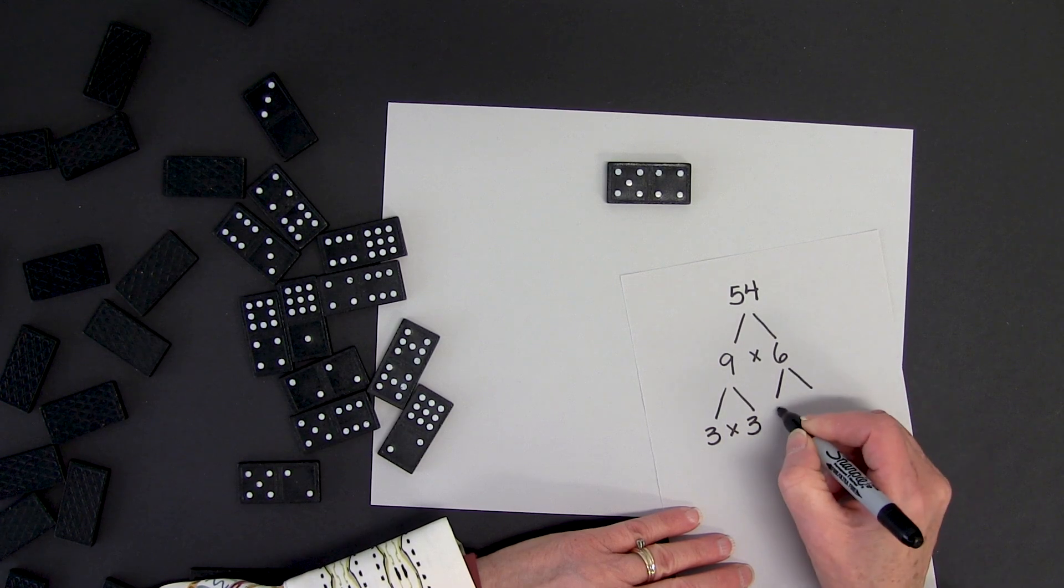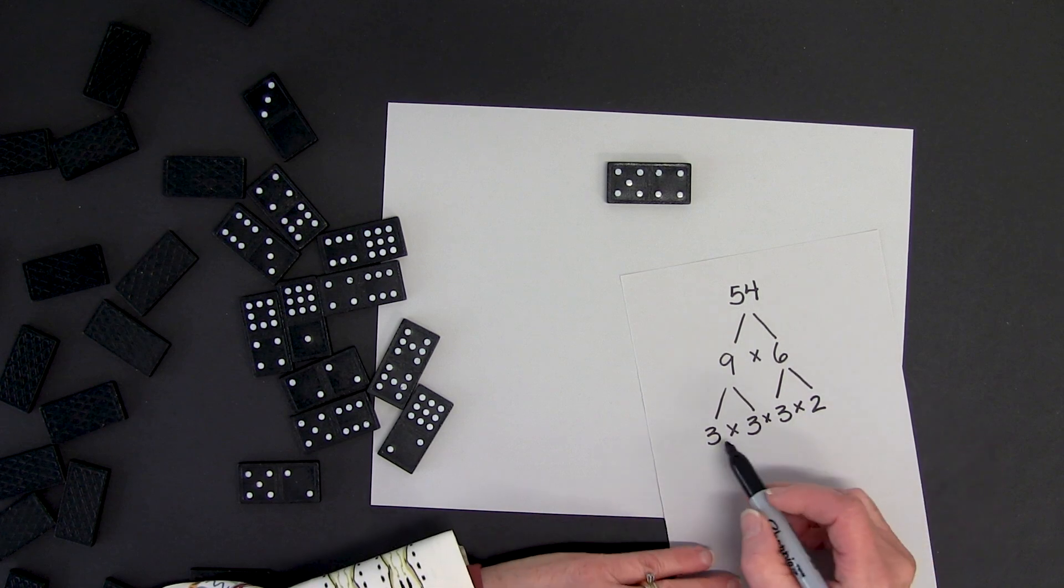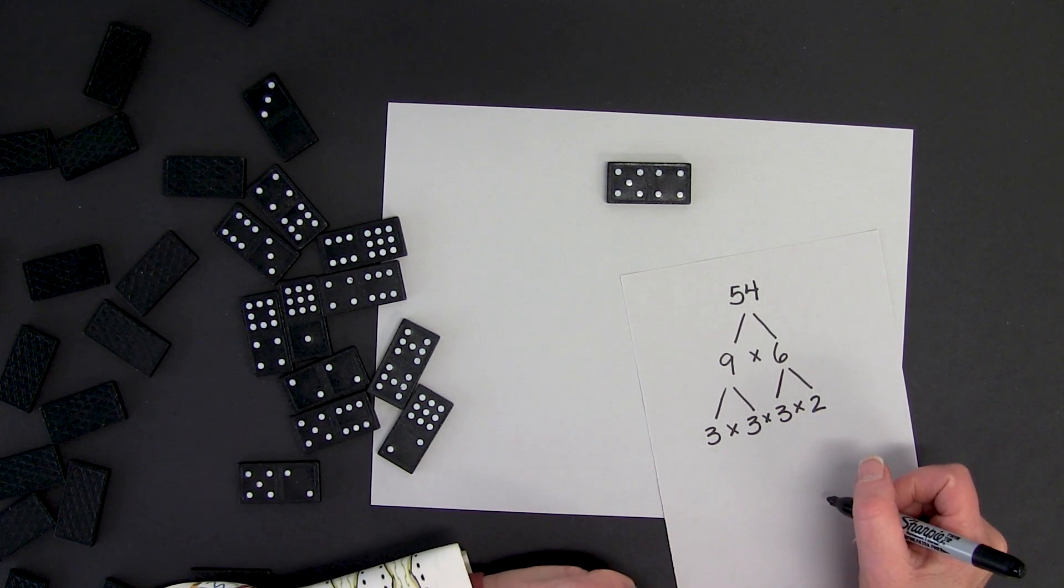And with 6, I have 3 times 2. Now I have factored it down to the prime numbers.